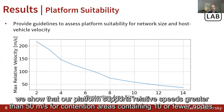For the assumed slot duration, communication range, and keep-out radius, we show that our platform supports relative speeds greater than 50 meters per second for contention areas containing 10 or fewer nodes.